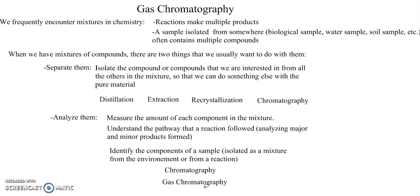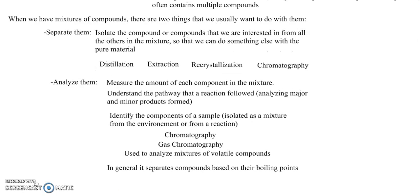Gas chromatography is used to analyze mixtures of volatile compounds, and in particular it separates compounds based on their boiling points. Things that are lower boiling travel faster through the gas chromatography, whereas things that are higher boiling travel slower.